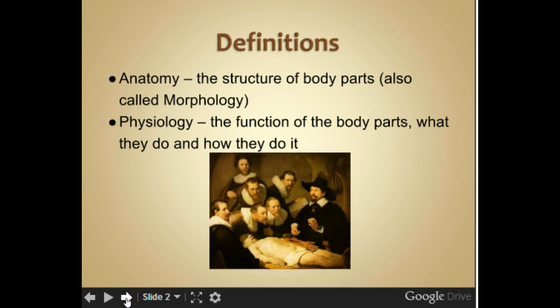Definitions. Anatomy is the structure of body parts, also called morphology. Anatomy deals with, for example, this is your spleen and this is where it's located in your body — that's anatomy. Physiology is the function of the body parts, what they do and how they do it. So what the spleen does — its function and purpose in the body.